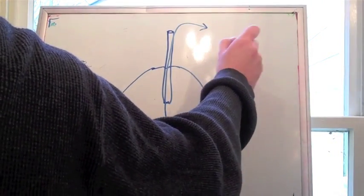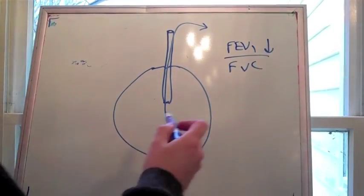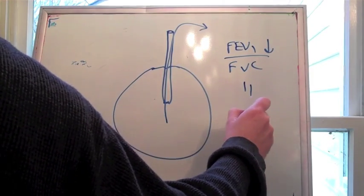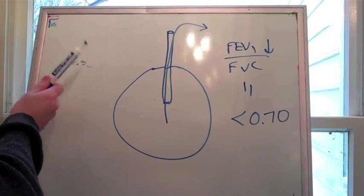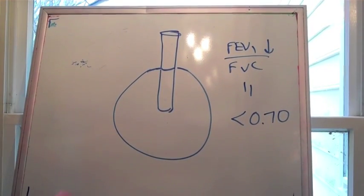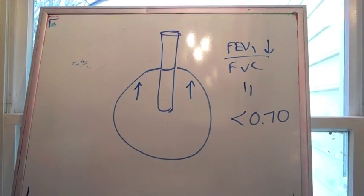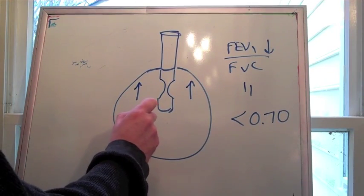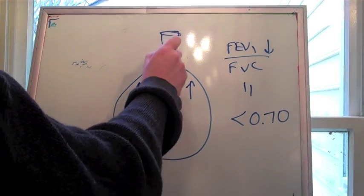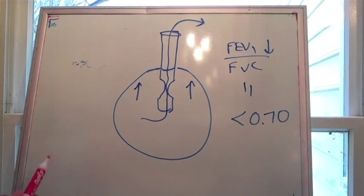So again, your FEV1 will be low. Your FVC will be normal. And then your ratio is therefore low. Now, there's another way, physiologically, why you have trouble getting air out. And that's in the setting of emphysema and air trapping. And you can envision the air pressure inside the lungs being so high that it pinches off those flexible airways, especially when they lose their elastic recoil from emphysema. And again, you have trouble getting the air out.